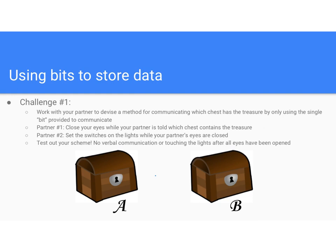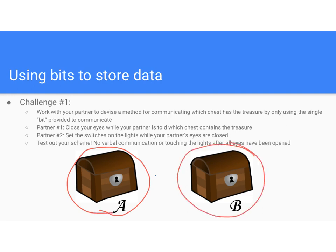This is an activity we were going to do, but since I'm not in class we're not going to do it. Let me explain how it was going to work: you would work with your partner to communicate information using bits. One partner would have their eyes closed, the other would have a treasure chest. The goal was to figure out which treasure chest had the treasure — chest A or chest B — using a little LED light that could be switched to on or off.